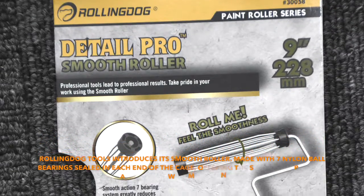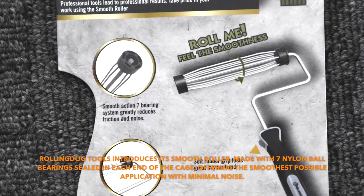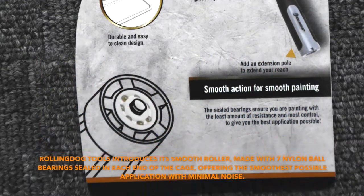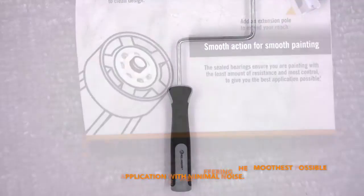Rolling Dog Tools introduces its smooth roller made with seven nylon ball bearings sealed in each end of the cage, offering the smoothest possible application with minimal noise.